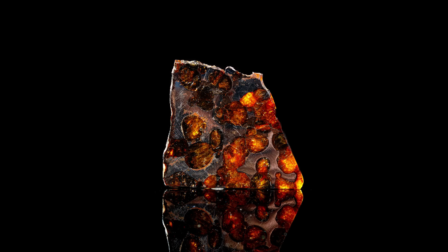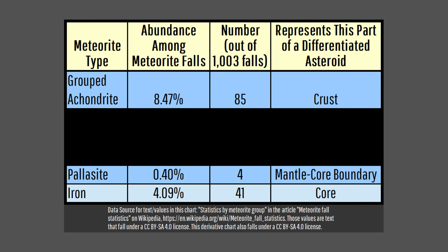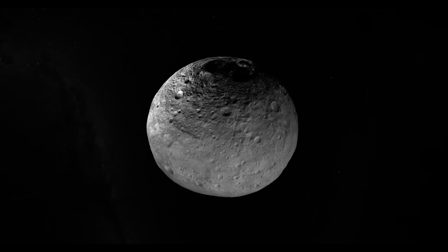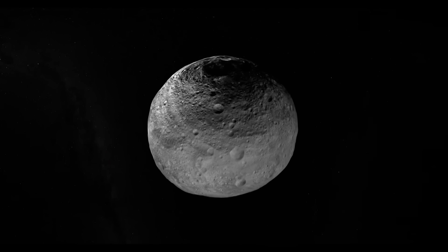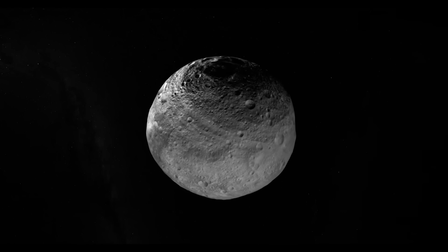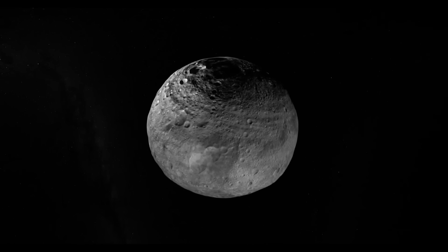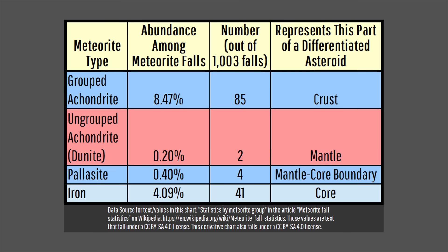Out of 1,003 documented and classified meteorite falls, only 4 have been from this teeny-tiny region. Thus, in theory, there should at least be dozens of meteorite fragments from a differentiated asteroid mantle, since they generally make up at least 30% by mass of such asteroids. And yet, out of 1,003 falls, only 2 olivine-rich mantle meteorites that were not pallasites have been found.